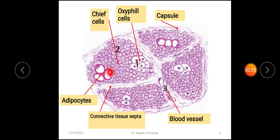Within the lobule of the parathyroid gland you can see three types of cells. First, the large lightly stained cells here are termed as the oxyphil or eosinophil cells. The staining property of the oxyphil cell is highly eosinophilic and highly acidophilic, because of the presence of numerous mitochondria.